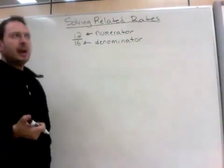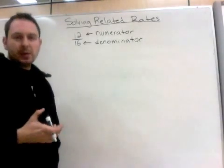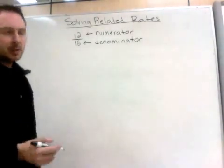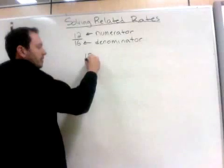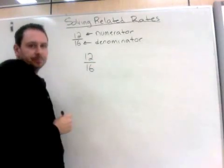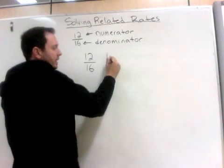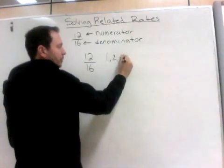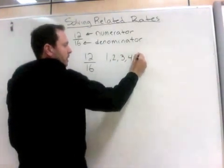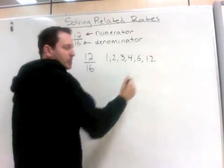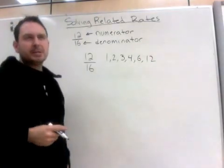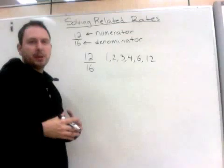Now to reduce a fraction, what we need to do is find out what these numbers have in common. So if we look at the numbers 12 and 16, 12 has factors 1, 2, 3, 4, 6, and 12. These are all the numbers that you can multiply to get that number.